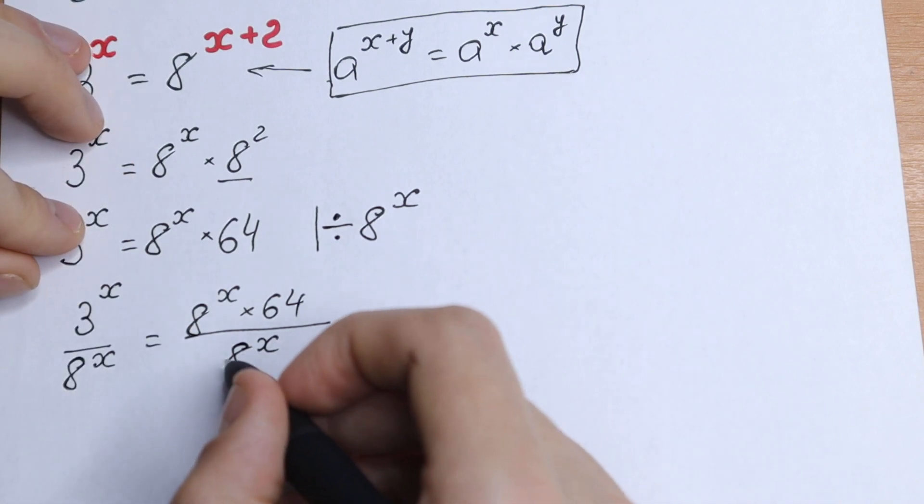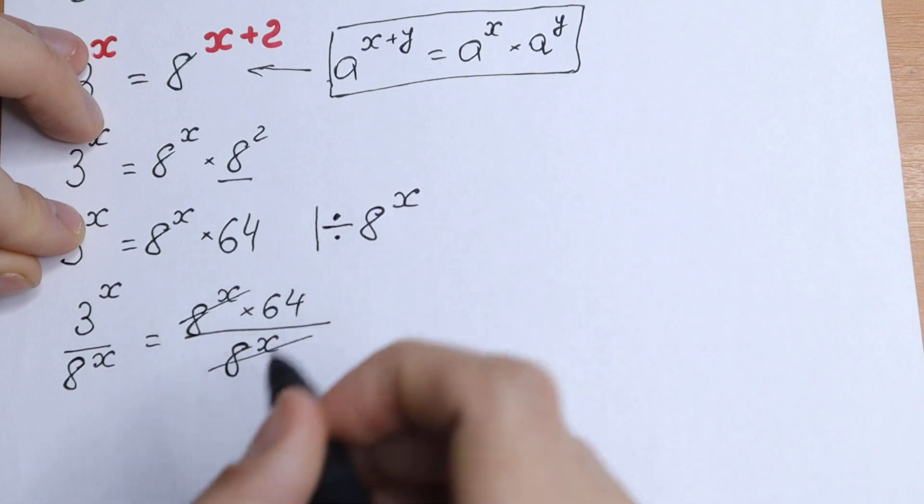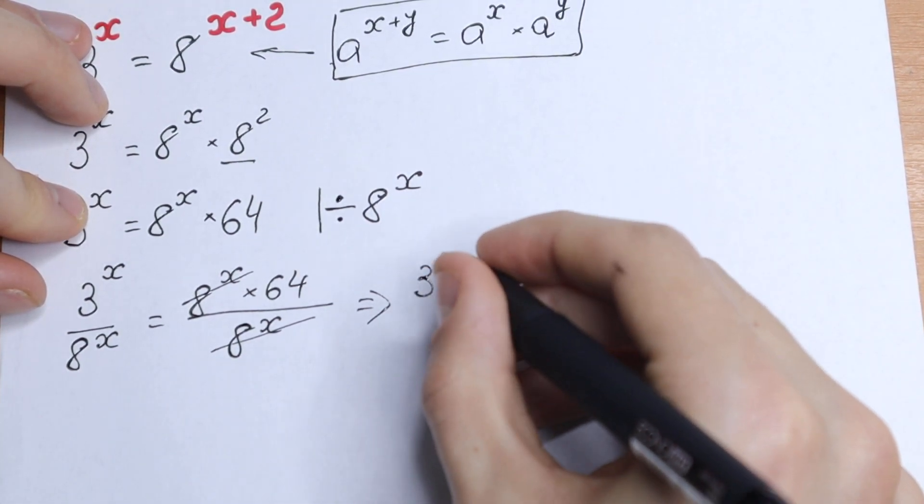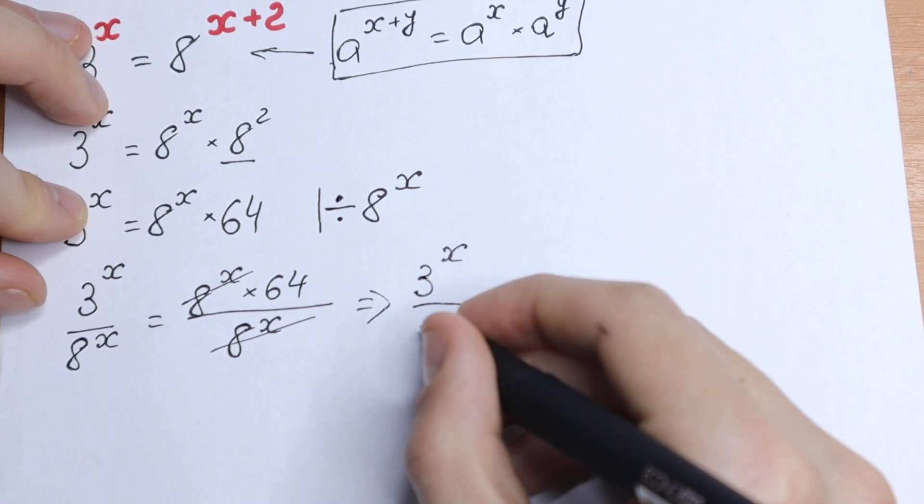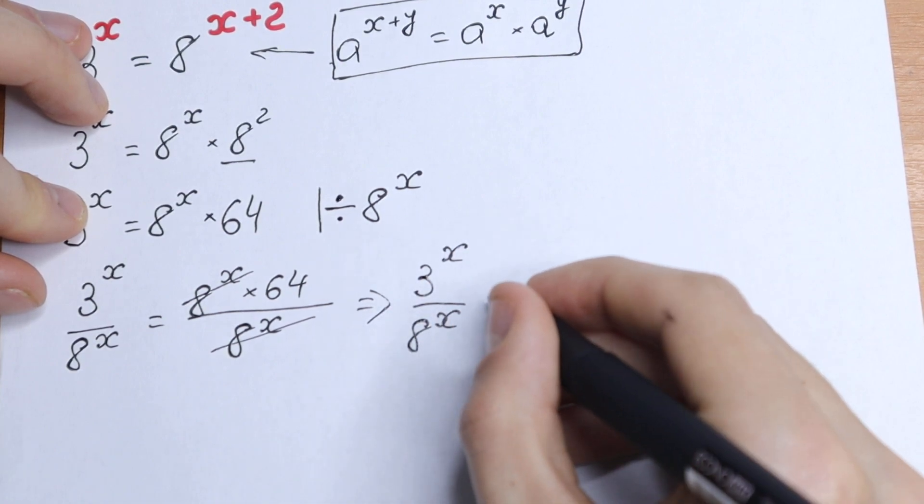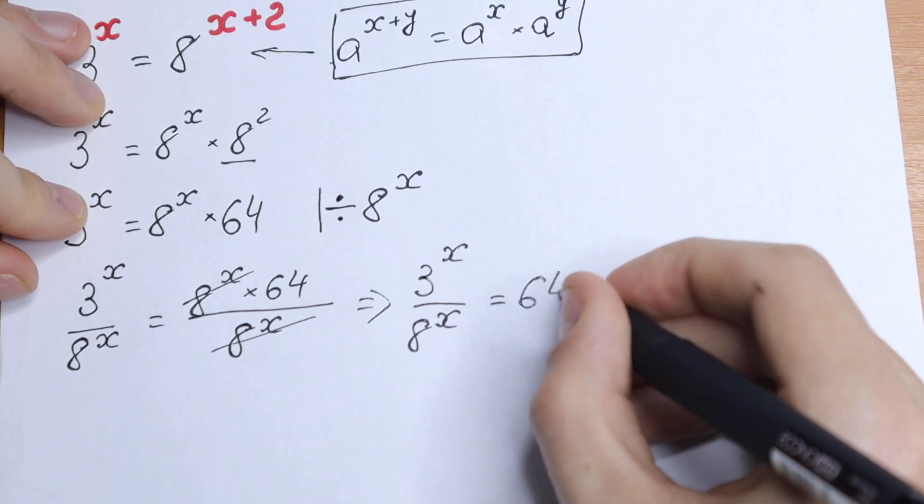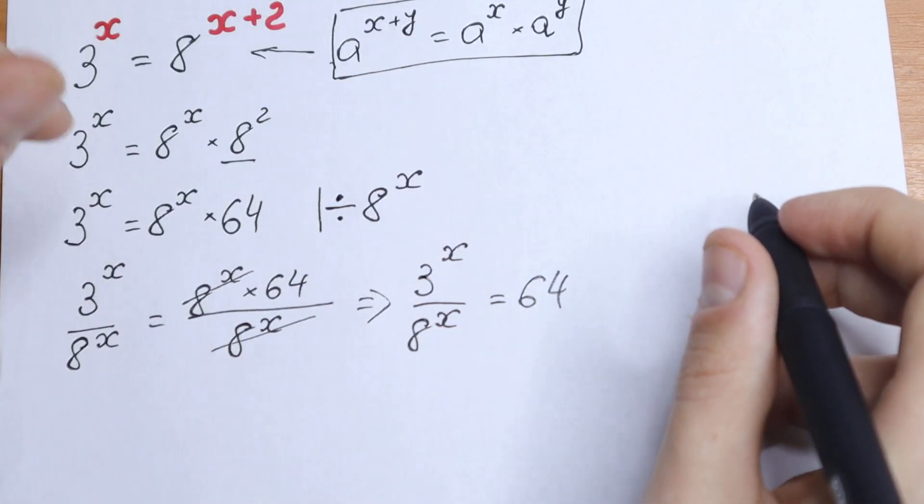So nothing changes. But take a look, from here we can cancel it easily and we will have our equation. We will have 3 to the power x over 8 to the power x equal to 64. So let's work with this equation.